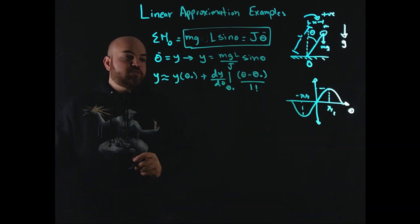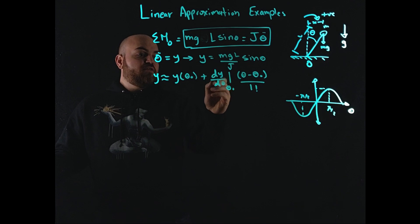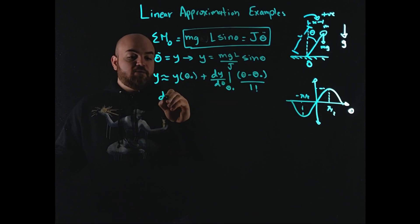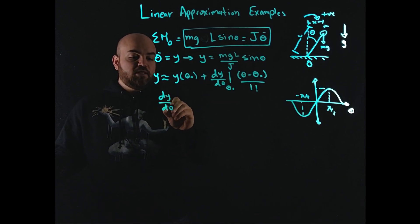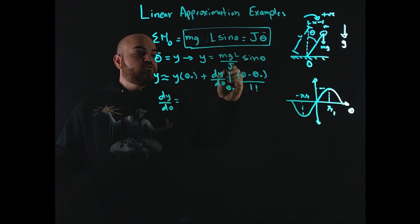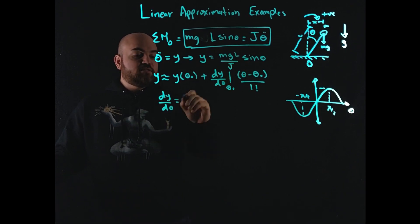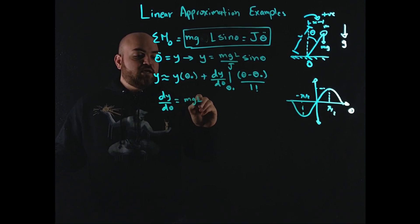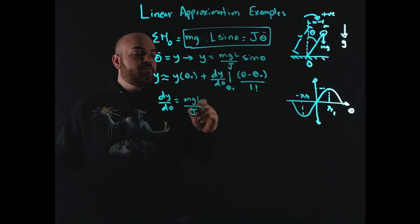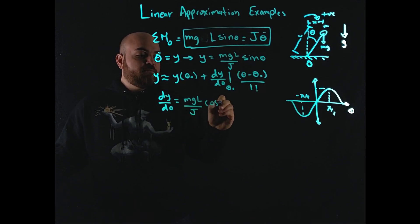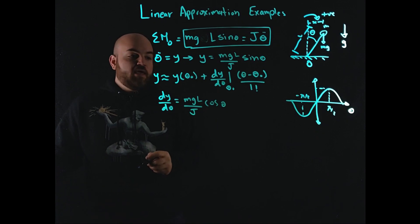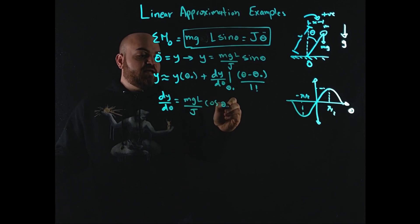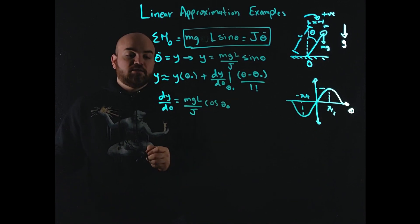So I can approximate y using Taylor series expansion that says it's equal to y at some theta zero or theta naught, some point, plus the first derivative of y with respect to theta at theta zero times theta minus theta zero divided by one factorial. And then there's higher order terms, we're going to drop them. We're just going to take a first order expansion. So the derivative here, dy d theta is equal to what? So this is a constant, so it stays constant, mg L over J, right? Sine theta derivative is cosine theta, right?